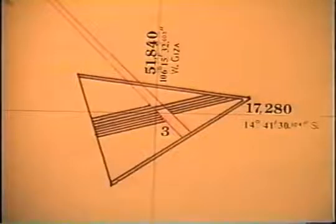The 17,280 encodes the actual latitude of the Great Triangle. 14 degrees, 41 minutes, and 30.104 seconds south latitude. To find the Great Triangle's longitude to the west of the Great Pyramid at Giza, well, the triangle has three corners, doesn't it?